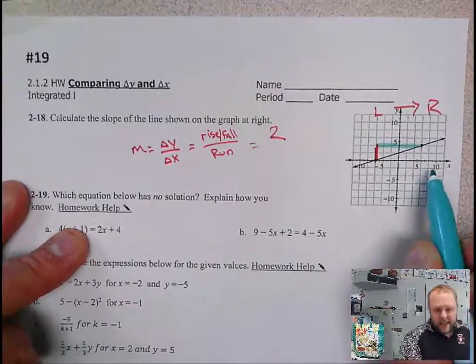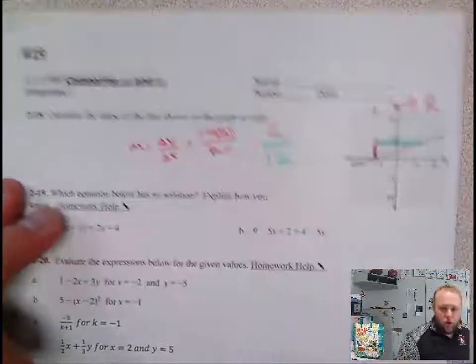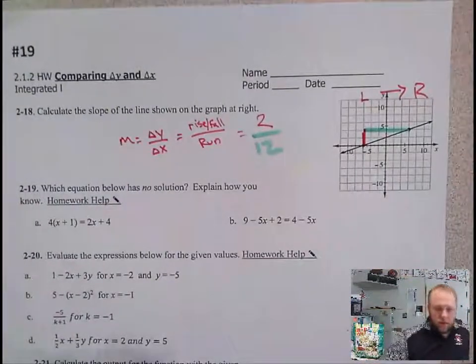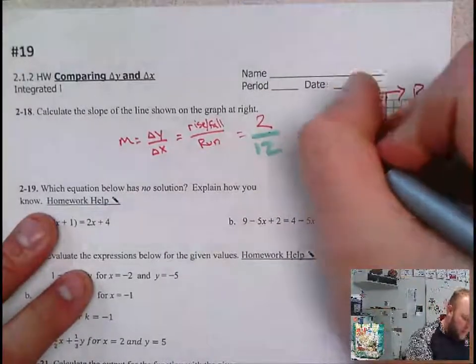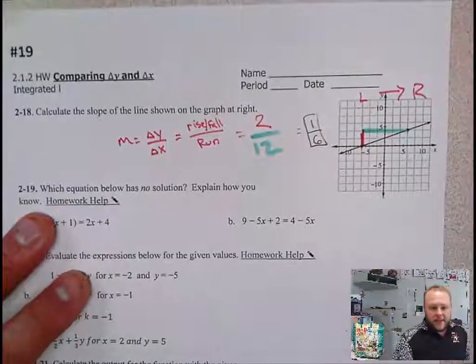So I run from negative six to positive six. So that means I run 12. Two over 12 reduces to one over six. I rise one, run six. That would be the slope.